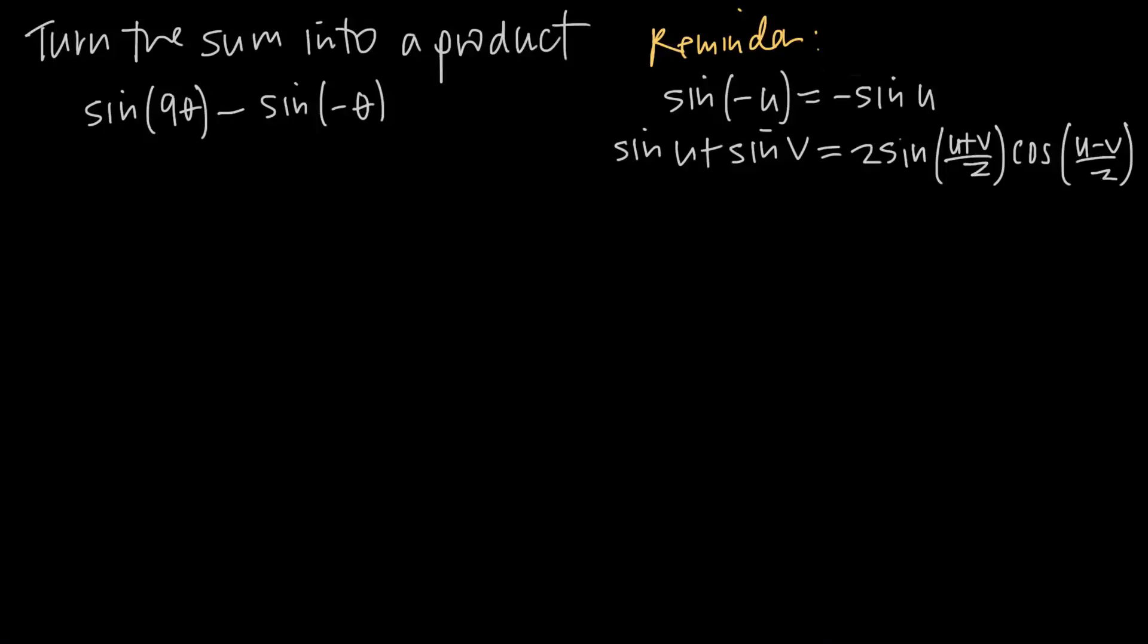In this video, we're talking about sum to product identities. And that's because in this particular problem, we've been asked to convert this sum, or actually it's starting out as a difference, into a product. So we have sine of 9θ minus sine of negative θ. And we need to turn this into an expression which is the product of two trig functions.